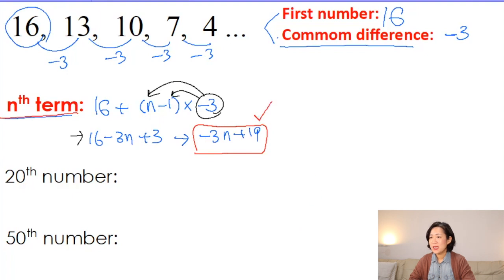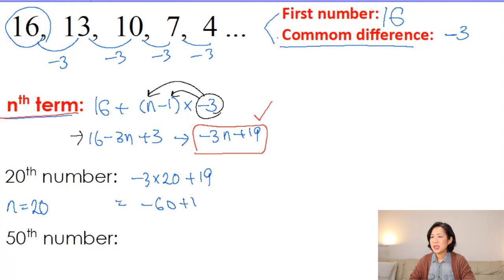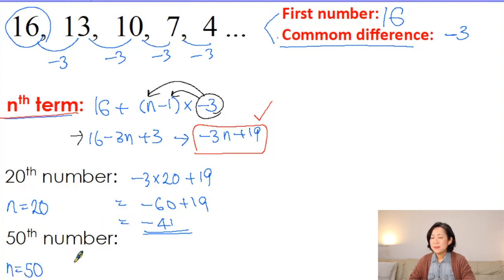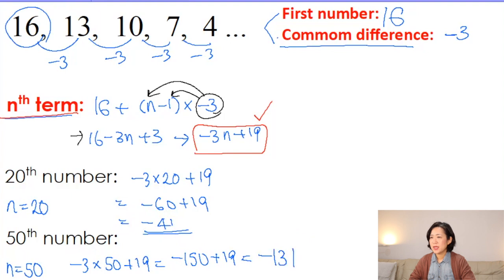You can put any number into n. For the 20th number, n = 20: minus 3 times 20 plus 19 equals minus 60 plus 19. For the 50th number, n = 50: minus 3 times 50 plus 19 equals minus 150 plus 19, which gives minus 131.